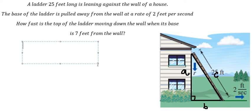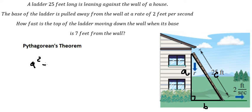So that means we can use the Pythagorean theorem. We have A squared plus B squared equals C squared. We know that C is 25.